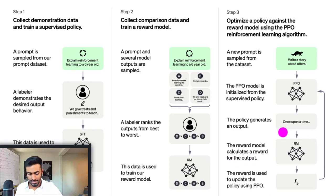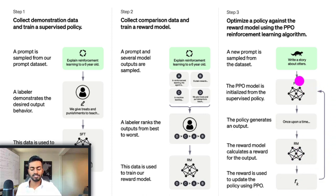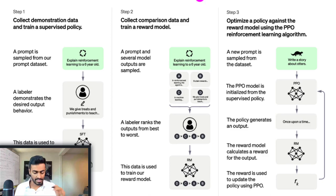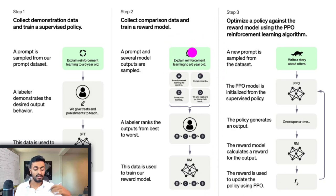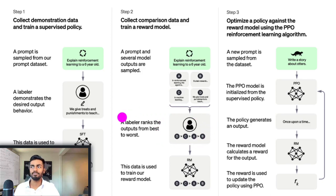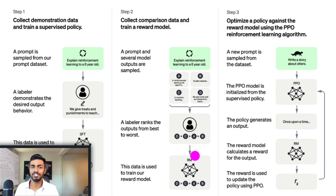We use the trained rewards model to understand the quality of unseen responses, then use that output reward to further fine-tune our fine-tuned GPT model to generate more human, factual, and non-toxic responses. Step two covers: how GPT generates multiple responses from a single input, how labelers rank responses with high quality using a Likert scale, and how to train a rewards model with an effective loss function.